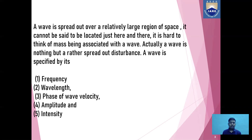Now let us discuss what is a wave. A wave is spread out over a relatively large region of space. It cannot be said to be located just here and there. It is hard to think of mass being associated with a wave. Actually a wave is nothing but a rather spread out disturbance. A wave is specified by its frequency, wavelength, phase of wave, velocity, amplitude and its intensity.